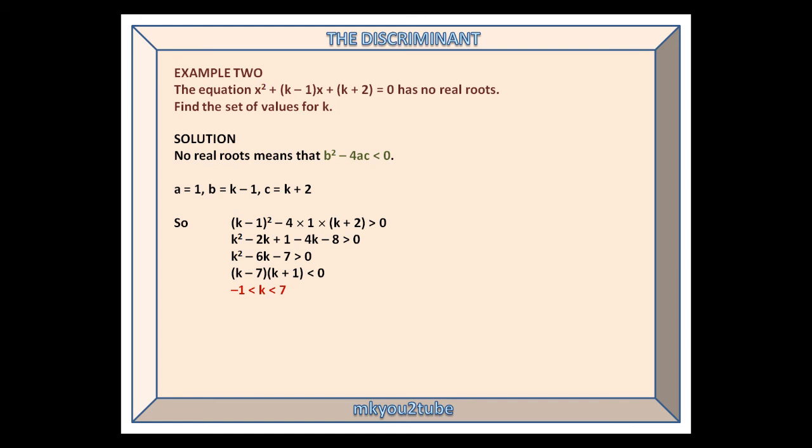Again, start by finding a is 1, b is k minus 1, and c is k plus 2. Substituting and rearranging gives k squared minus 6k minus 7 is greater than 0, from which (k minus 7)(k plus 1) is less than 0, and minus 1 is less than k, which is less than 7.